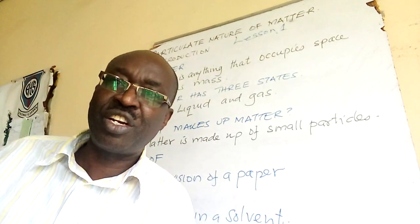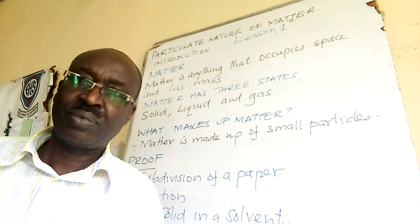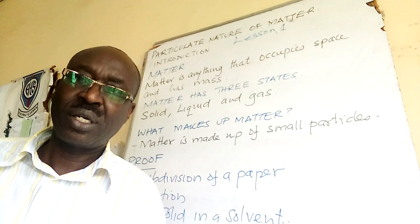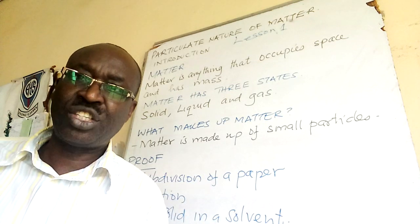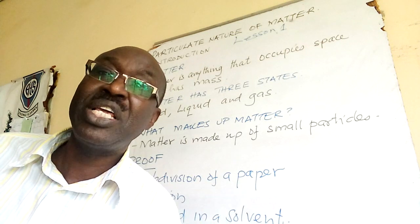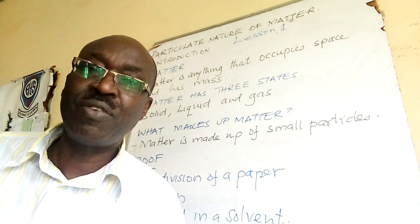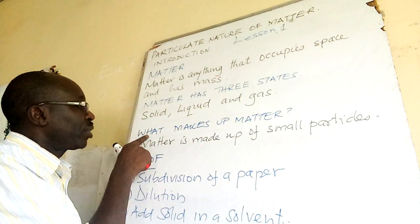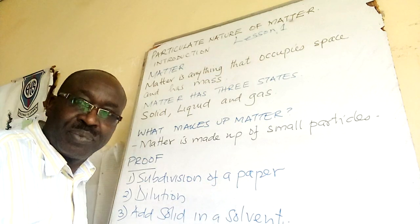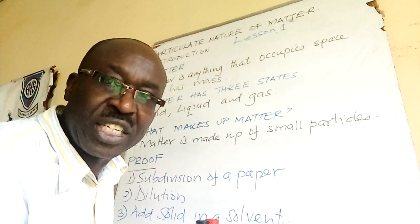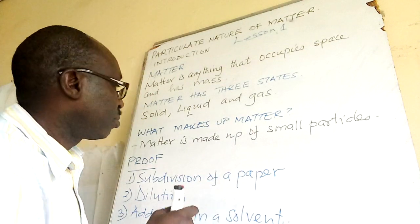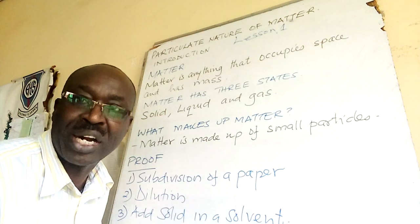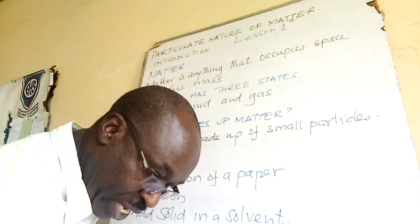Matter exists in three forms: solid, liquid, and gas. In a nutshell, matter can be in solid form, liquid form, and gaseous form. What makes up that matter, whether solid, liquid, or gaseous? Matter is made up of small particles.